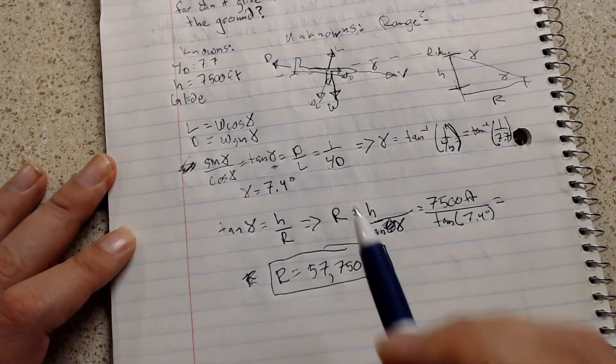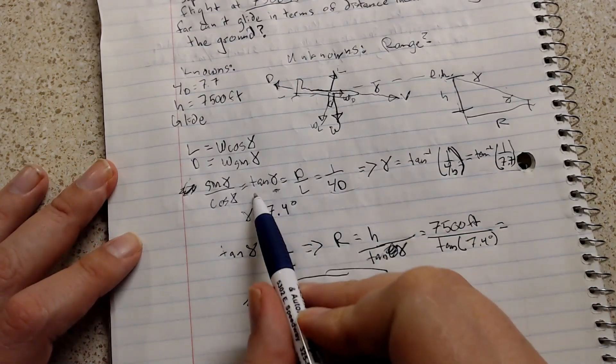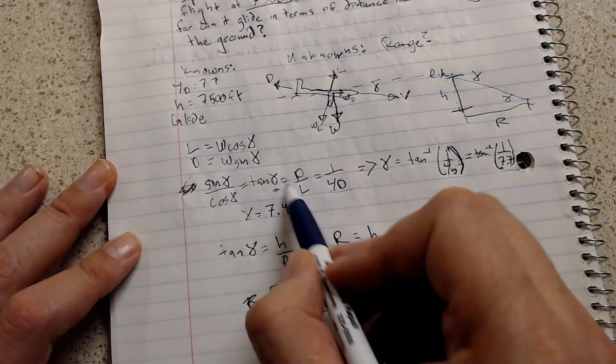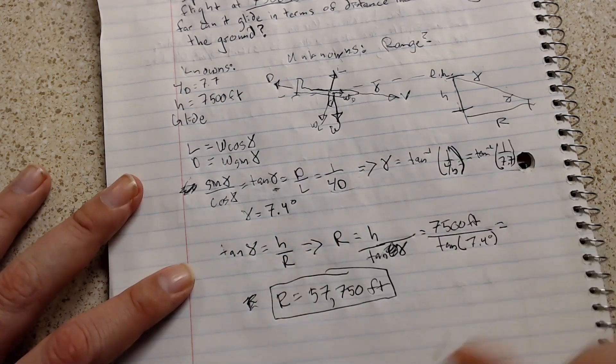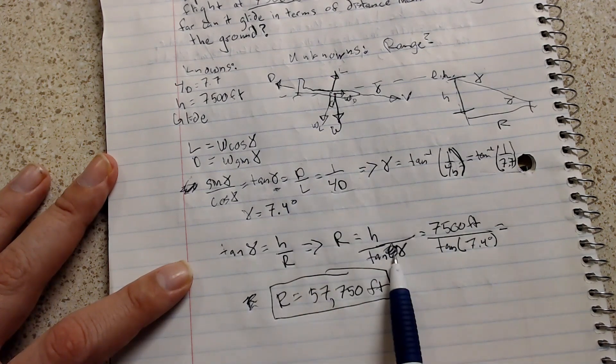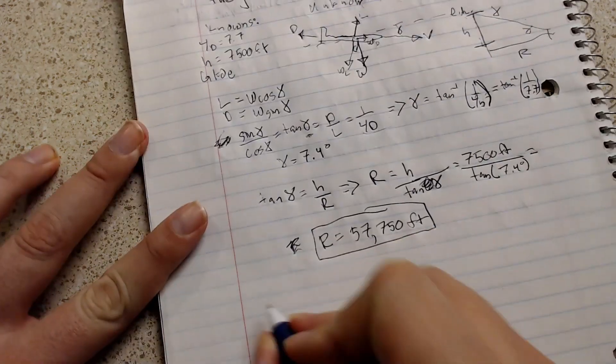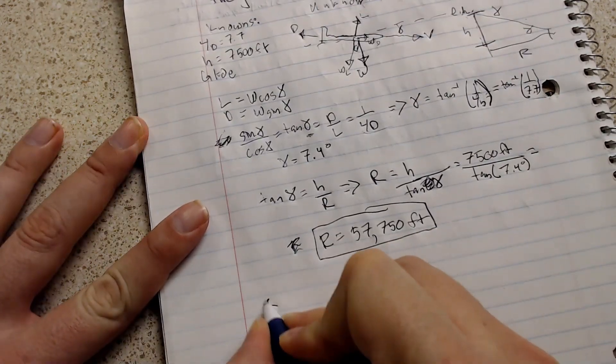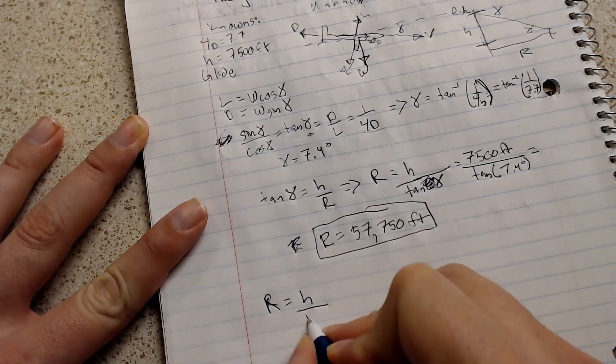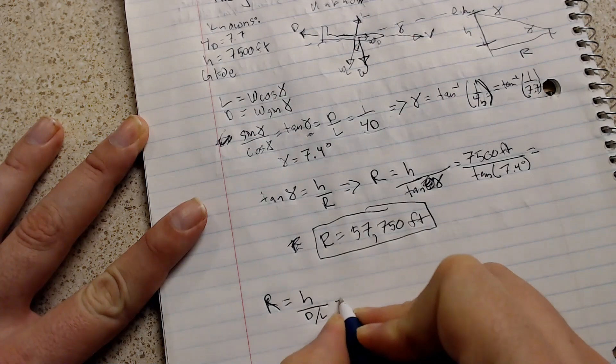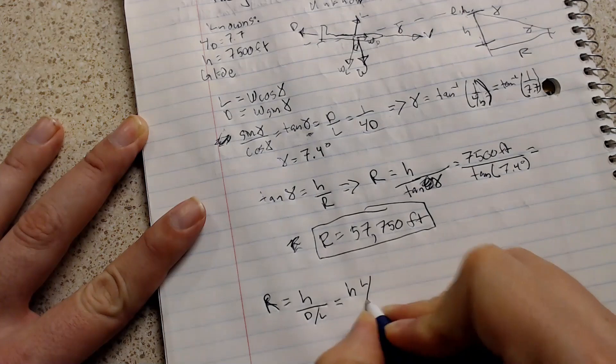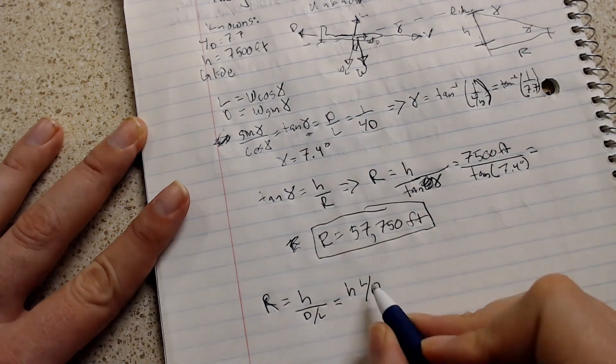Now, if you look back up here, when we were trying to find the flight path angle, we have tangent of the flight path angle equals the drag over the lift. Now, we can actually substitute that into this equation right here and get an equation that says the range is equal to the height times the drag over the lift, or rewriting that, it's equal to the height times the lift over drag ratio.